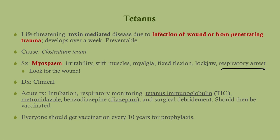The diagnosis is completely clinical. Treatment is supportive first — make sure you're ready to intubate them, monitor them, and if they go into respiratory distress they'll be intubated and sent to the ICU. As far as specific treatment: tetanus immunoglobulin to block the toxin, metronidazole to kill the bacteria, benzodiazepines to help with the muscle spasm symptoms, and surgical debridement to clean the wound. These patients should then be vaccinated. Everyone should get the vaccine every 10 years for prophylaxis — that's a universal recommendation.